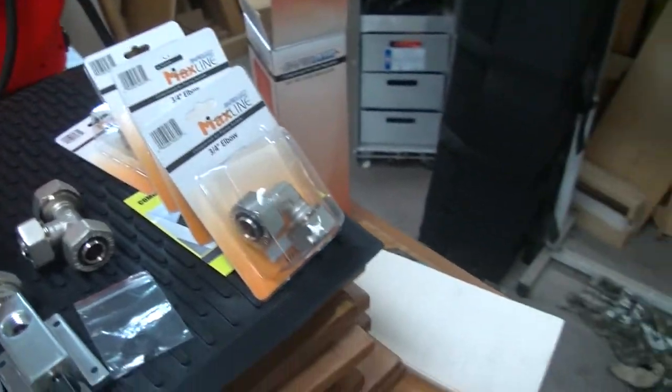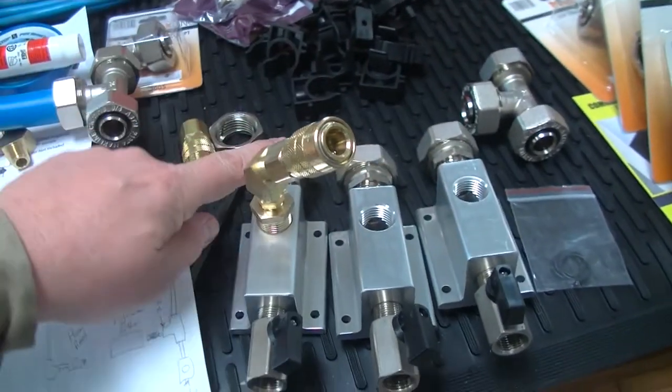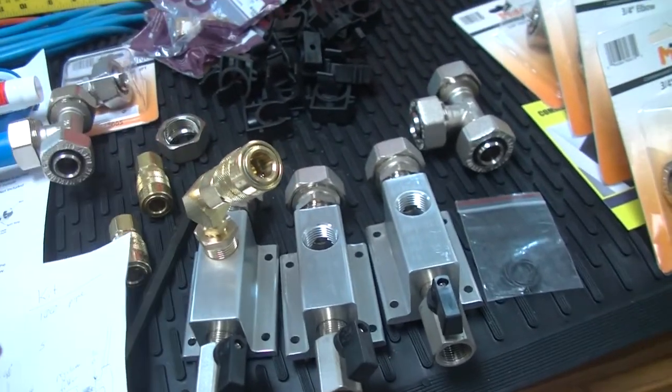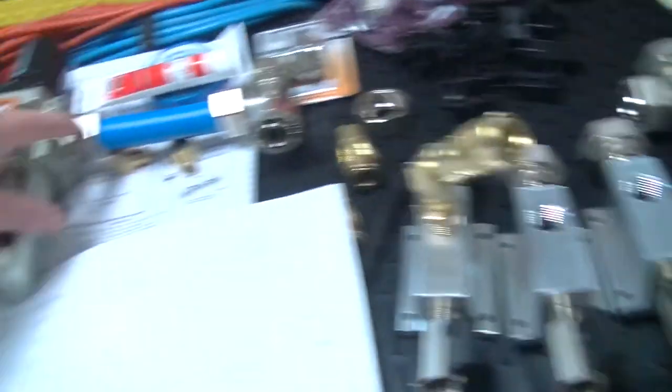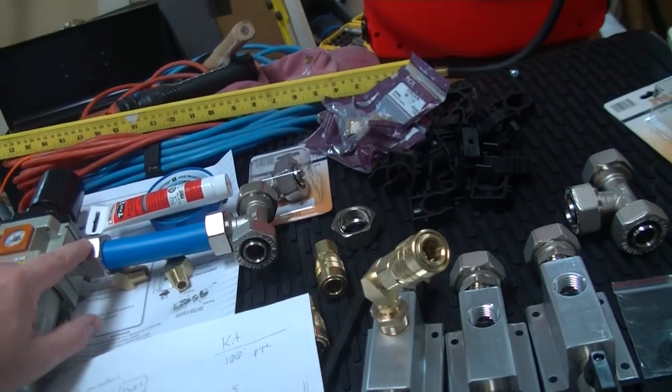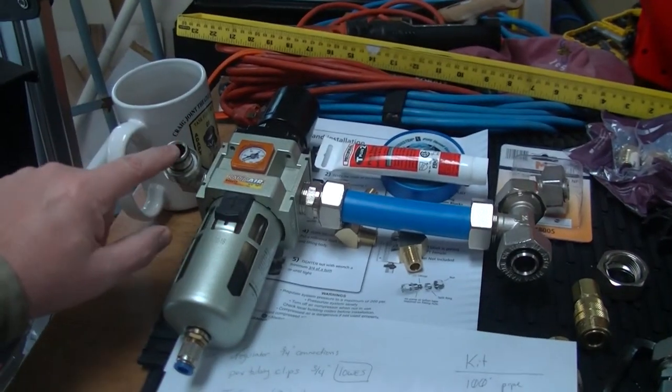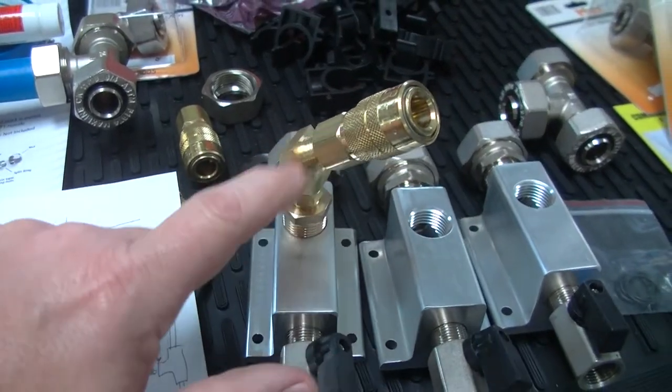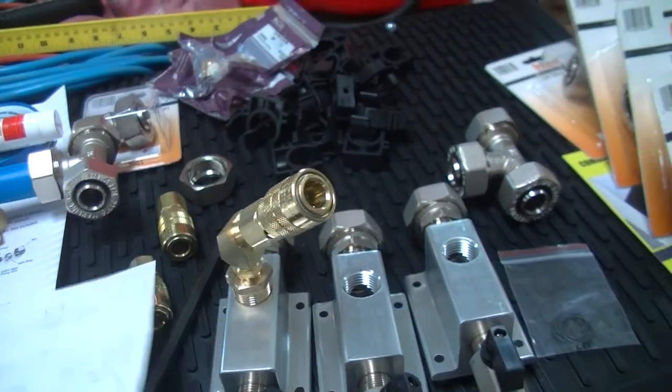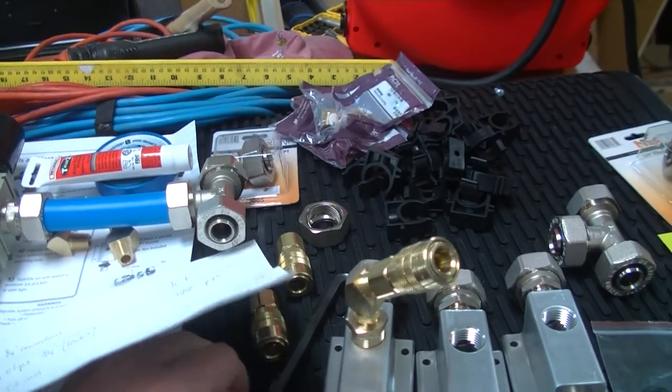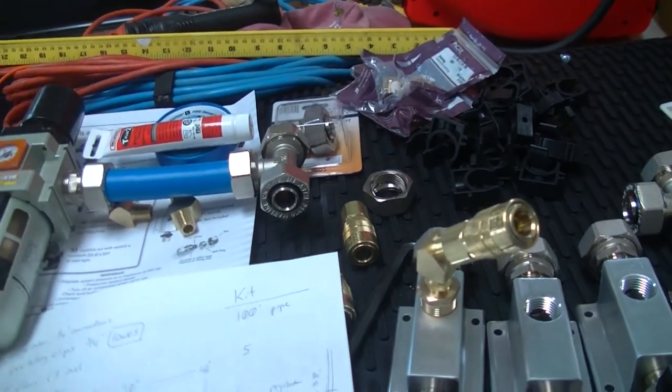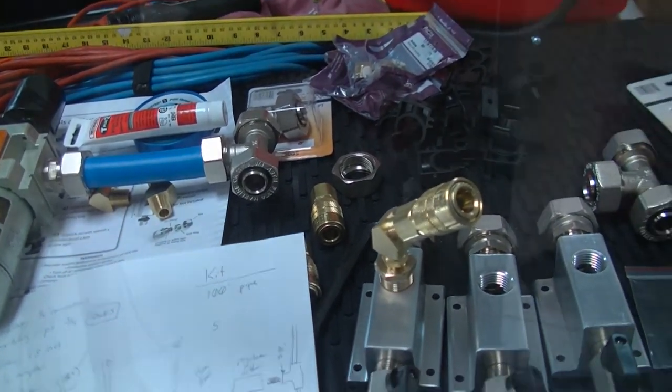The two T's are included. These three are included in the kit. There is one similar to this that's included in the kit. This 90 is not. None of this is included in the kit. So there's a little more expenditure. You don't just buy the kit and throw it up. There's some more things that you got to throw into it.